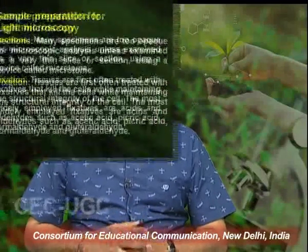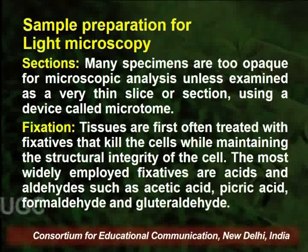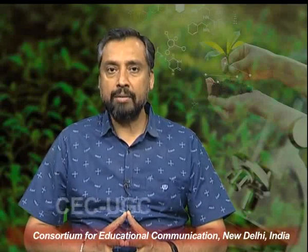Many specimens are too opaque for microscopic analysis unless examined as a very thin slice or section. These specimens are cut into thin slices or sections with the help of a device called a microtome. Upon cutting these sections, the structures are fixed. The tissues are first treated with fixatives that kill the cells while maintaining the structural integrity. The most widely employed fixatives are acids and aldehydes such as acetic acid, picric acid, formaldehyde, and glutaraldehyde.